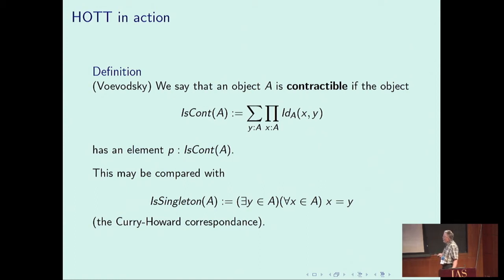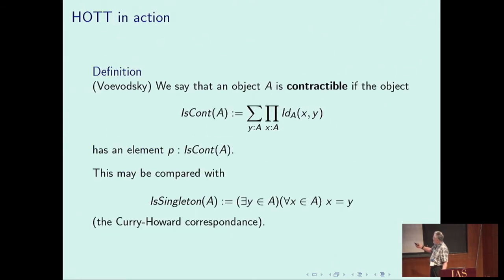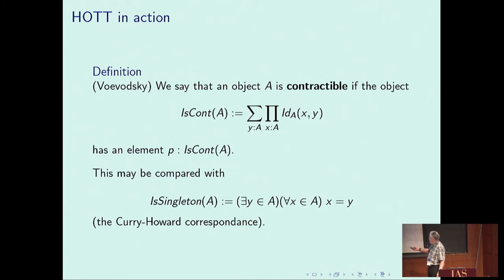In type theory, the universal quantifier of classical logic is replaced by a product and the existential quantifier is replaced by a sum. This was Martin-Löf's view: the formula Σ_y Π_x Id(x,y) is a formula in Martin-Löf type theory, understood as a predicate in first-order logic.